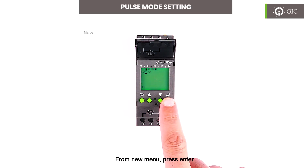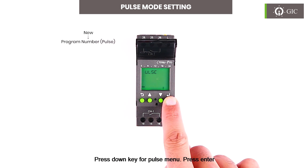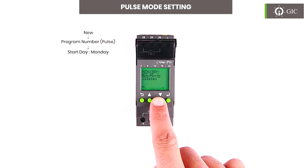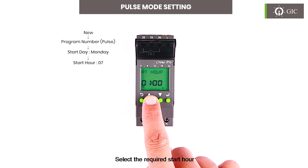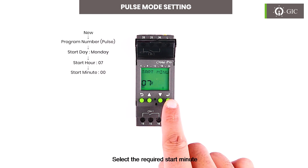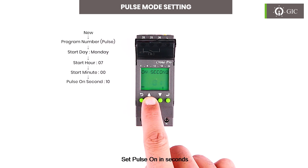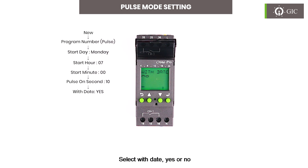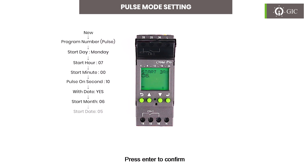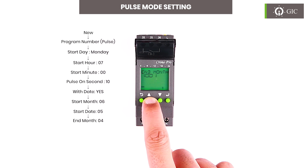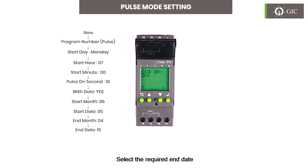From the new menu, press enter and press the down key for the pulse menu. Press enter. Select the required start day and press enter to confirm. Select the required start hour and press enter to confirm. Select the required start minute and press enter to confirm. Set the pulse on time in seconds and press enter to confirm. Select 'With Date' — yes or no — and press enter to confirm. Select the required start month, start date, end month, and end date, pressing enter to confirm each. The pulse program is saved. In this example, the output will be on for 10 seconds for the selected start date and time. This completes the programming.